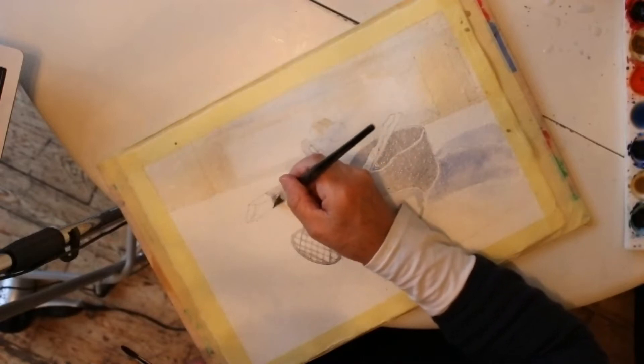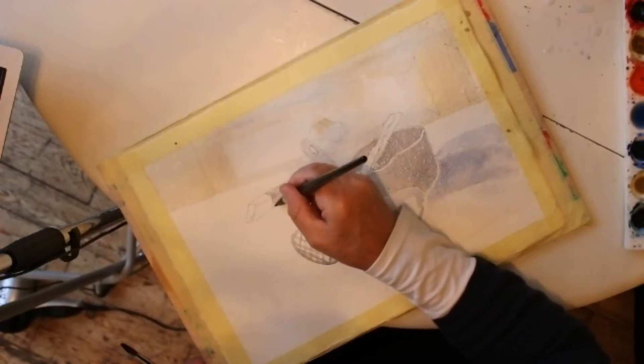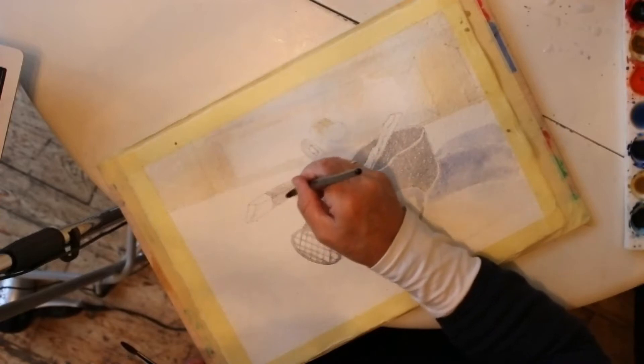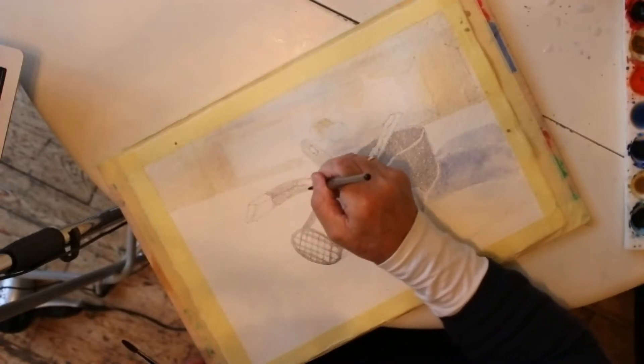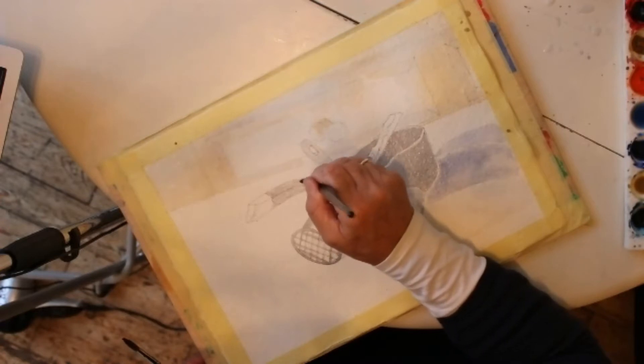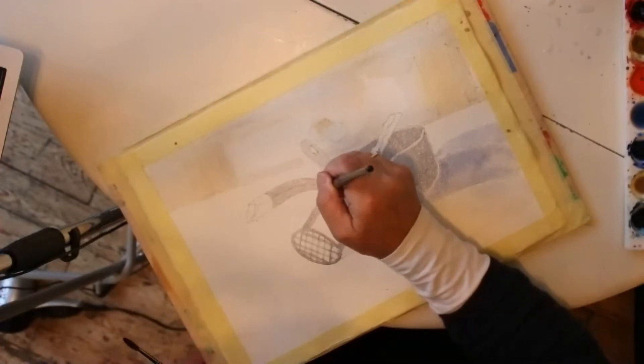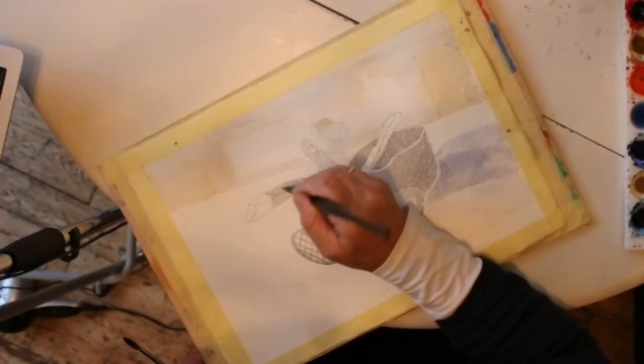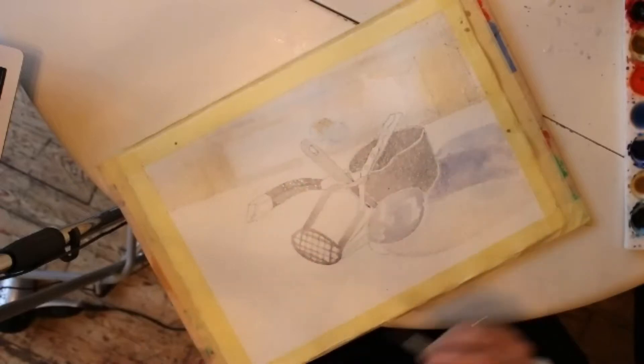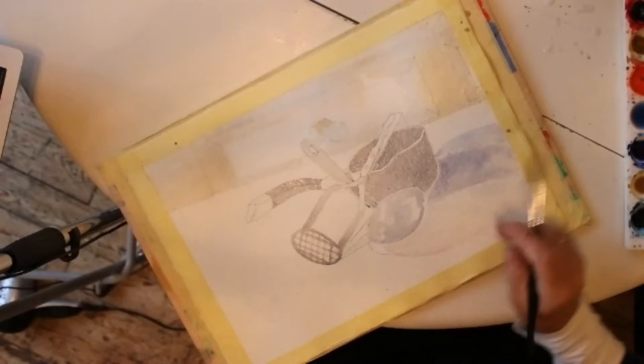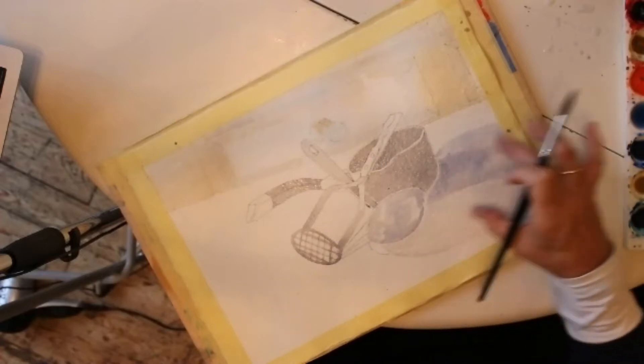The light source is important when you're painting. In this instance, it's coming very much from the left of me, which is an ideal situation, and it's catching the forms in different places. It's important that you consider that.